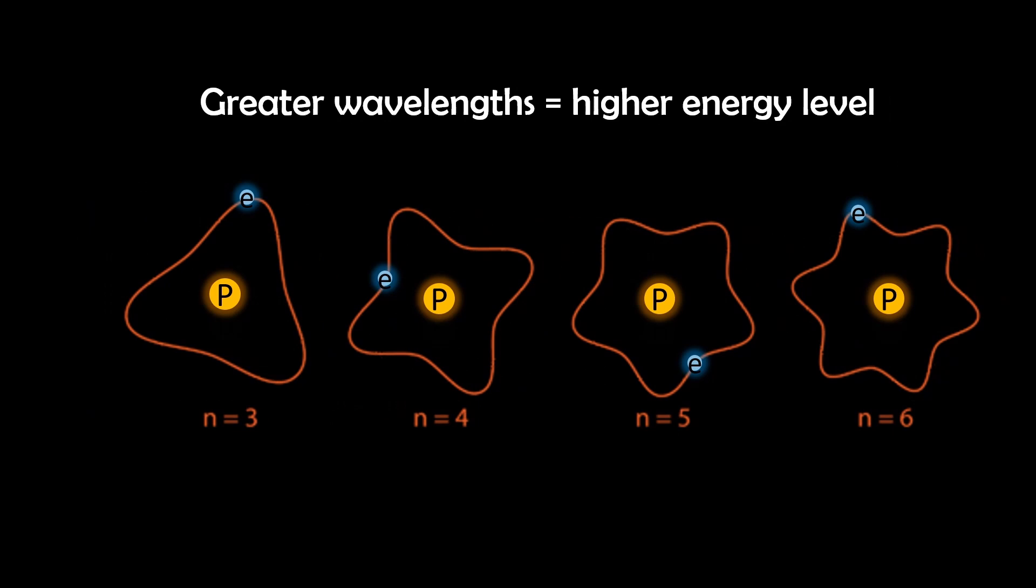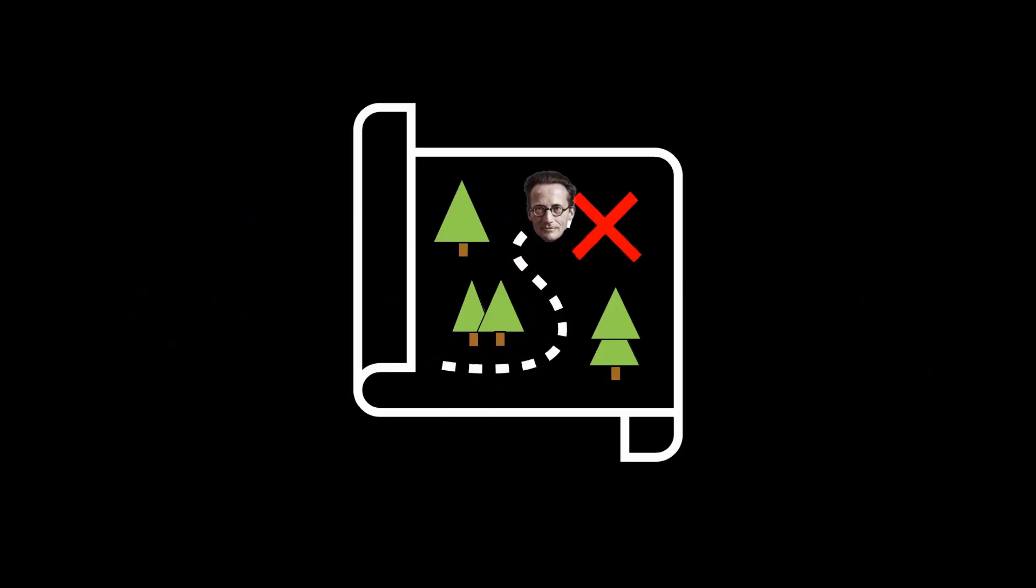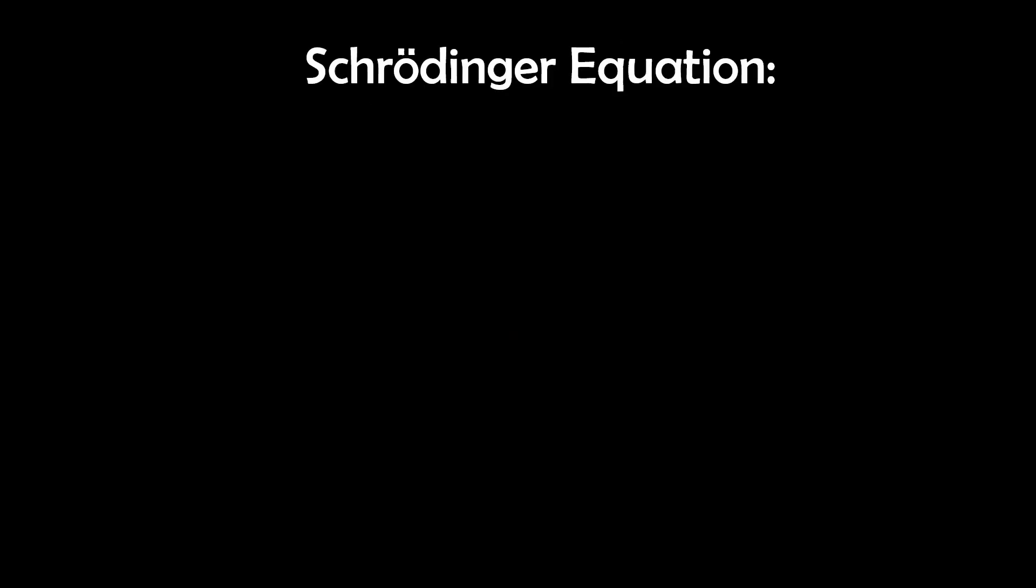Recognizing this wave-like behavior in electrons was a game changer. It led scientists on a quest to mathematically model these properties. So enter Erwin Schrödinger, a key figure who formulated what we know as the Schrödinger equation.